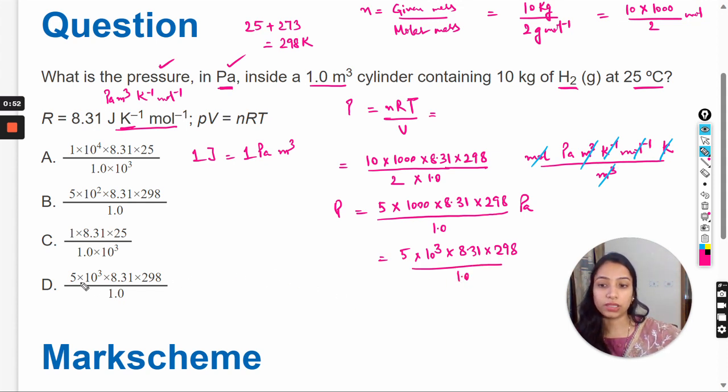So here you can see 5 multiply 10 raised to the power 3 multiply 8.31 multiply 298 divide by 1.0. So it means the answer should be option D.